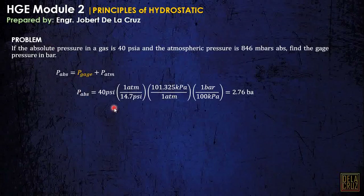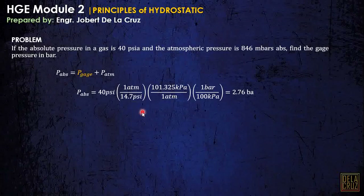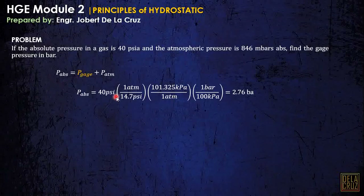We need our units in bars. The absolute pressure is 40 psi absolute, so we convert this directly to bars. Take note that in every 14.7 psi we have 1 atmosphere, in every 1 atmosphere we have 101.325 kilopascal, and in every 100 kilopascal we have 1 bar. The units cancel out and we get the conversion from PSIA to bar.